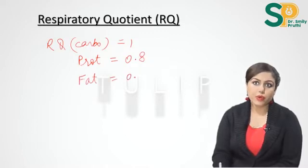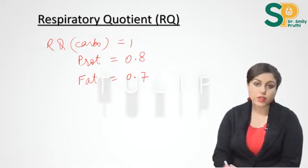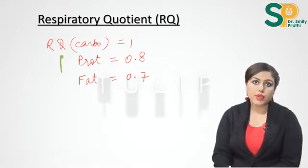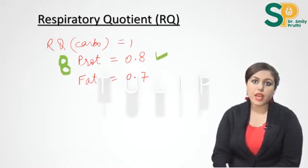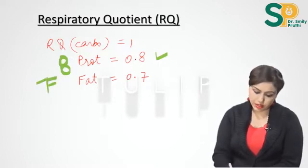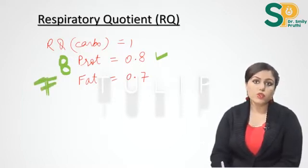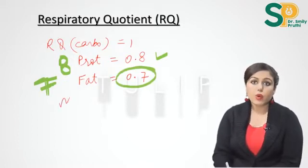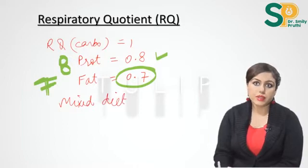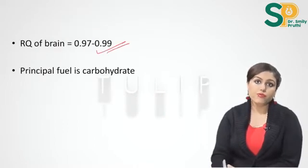RQ for proteins is 0.8 and RQ for fats is 0.7. It is easy to learn: P of protein can be converted to number 8, so for proteins it is 0.8. F of fat can be converted to number 7, so for fats it is 0.7. RQ for mixed diet is 0.85.